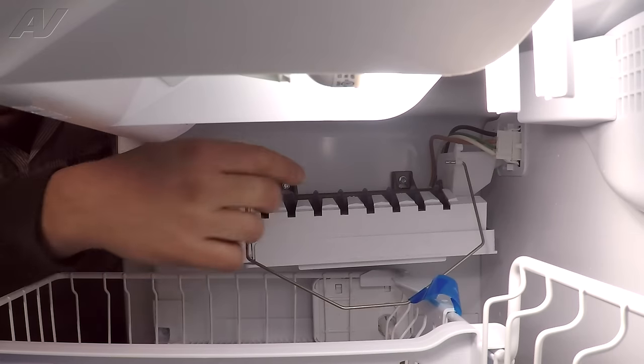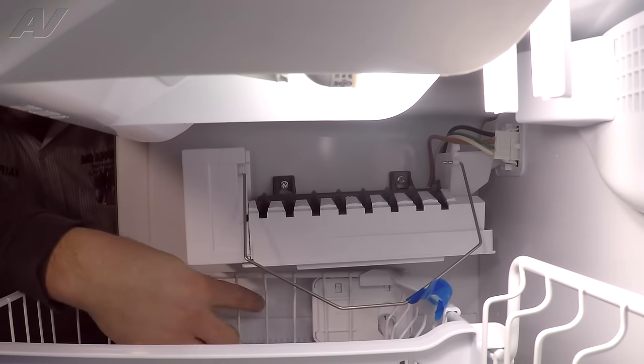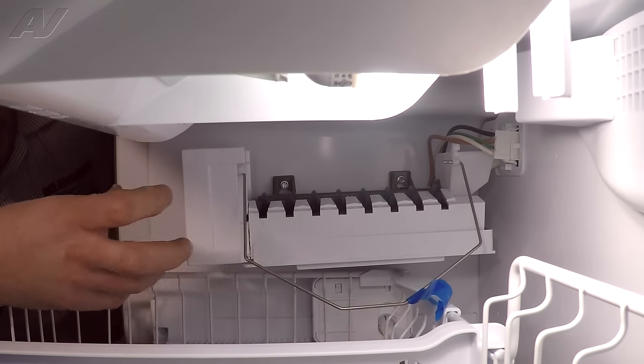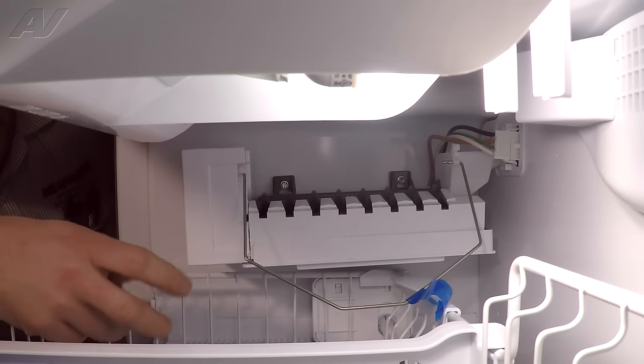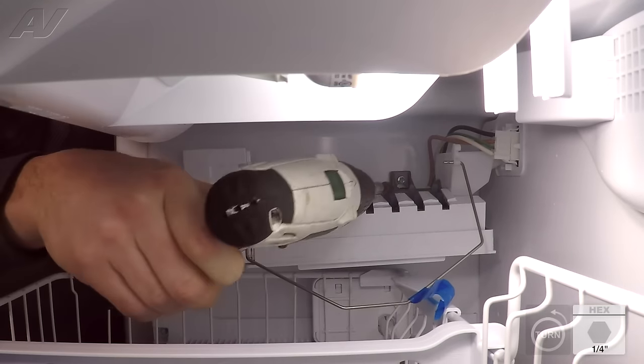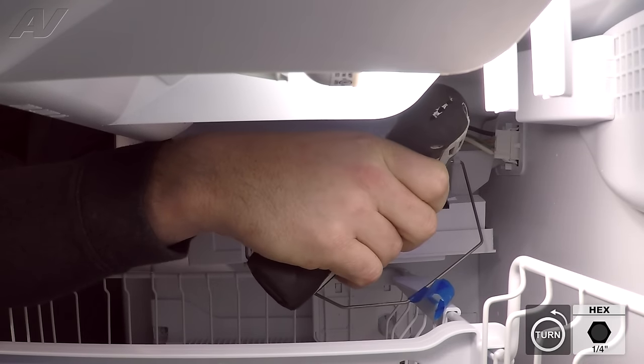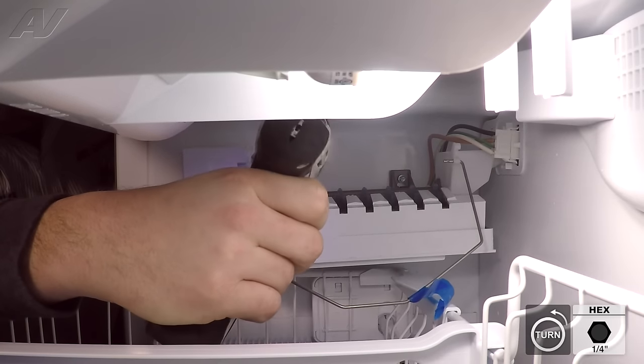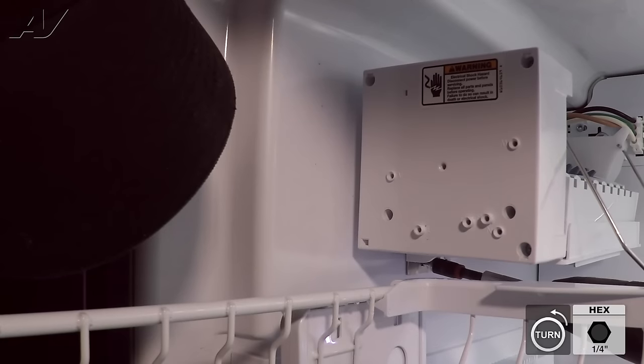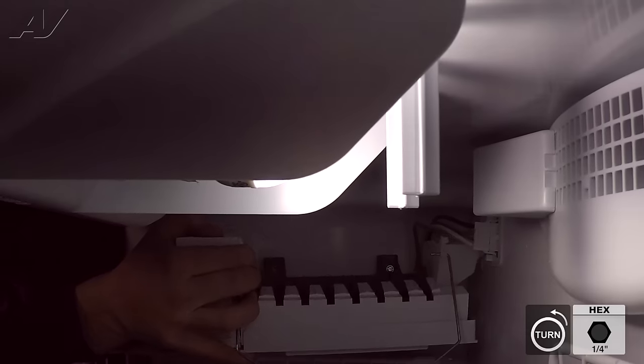To do that, there's two quarter inch screws here and here that hold the ice maker in place. There's actually going to be a third one underneath through a bracket as well. The two on the top, we just have to loosen. We don't have to remove completely. The ice maker has keyed tabs that we can lift it off. So we'll just loosen those and we'll remove the bottom one. Now we just take the ice maker and lift up and off of the screws at the top there.